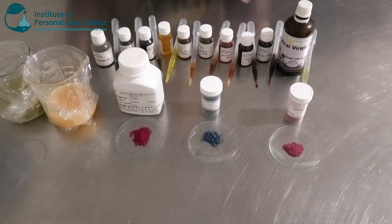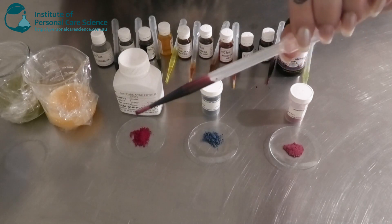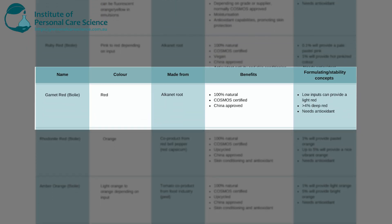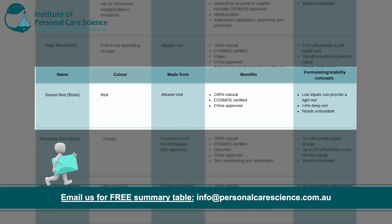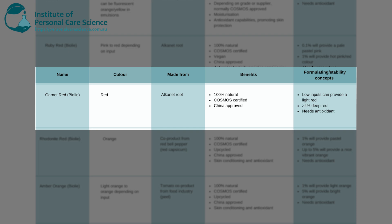My next one is the Garnet Red, which gives a really nice deep red color. This is also from the Alkanet Root — a beautiful red oil. It's Cosmos certified, 100% natural, and China compliant. Depending on the input, you'll get a light shade of that common red color, or the more you use, you get a heavy, deep red color.